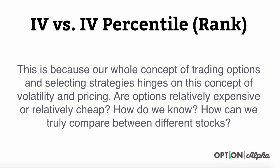This is because our whole concept of trading options and selecting the strategies hinges on this idea of volatility and pricing. Are options relatively expensive or relatively cheap? How do we know when? How can we truly compare different stocks? Because not every stock is going to act exactly the same. Implied volatility on one stock may be different than another, and one of the ways we can bring all of this together is using IV percentile or IV rank.